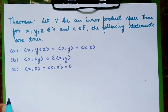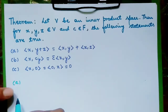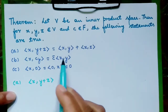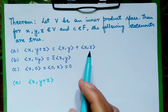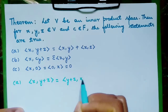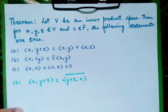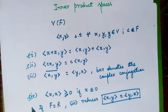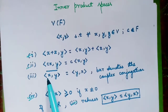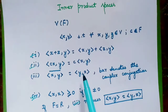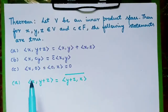Let us prove the first one. We shall prove that ⟨x, y+z⟩ = ⟨x,y⟩ + ⟨x,z⟩. We can write this with a complex conjugation because v is an inner product space and we know that the four conditions are satisfied. So the complex conjugation of ⟨x,y⟩ is equal to ⟨y,x⟩.